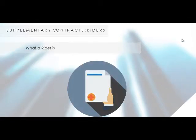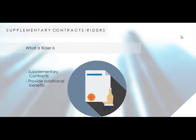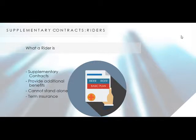Let's start by finding out what a Rider is. Riders are supplementary contracts that provide additional benefits for a minimal cost. They need a basic plan to be attached to. That's why they're called Riders. They are term insurance because they are applicable only for a limited period, and may be enforced only until age 60 of the insured.